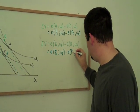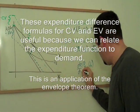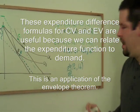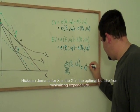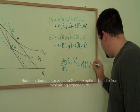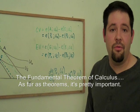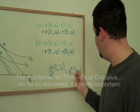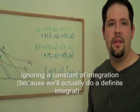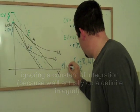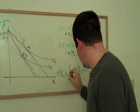If we take the derivative of the expenditure function with respect to the price, that turns out to be the Hicksian demand curve. We have this in calculus. There's this calculus result that relates the derivative to the integral. So if we integrate both sides of this, we get the expenditure function. Just taking the integral of the derivative, that gets us the expenditure function.